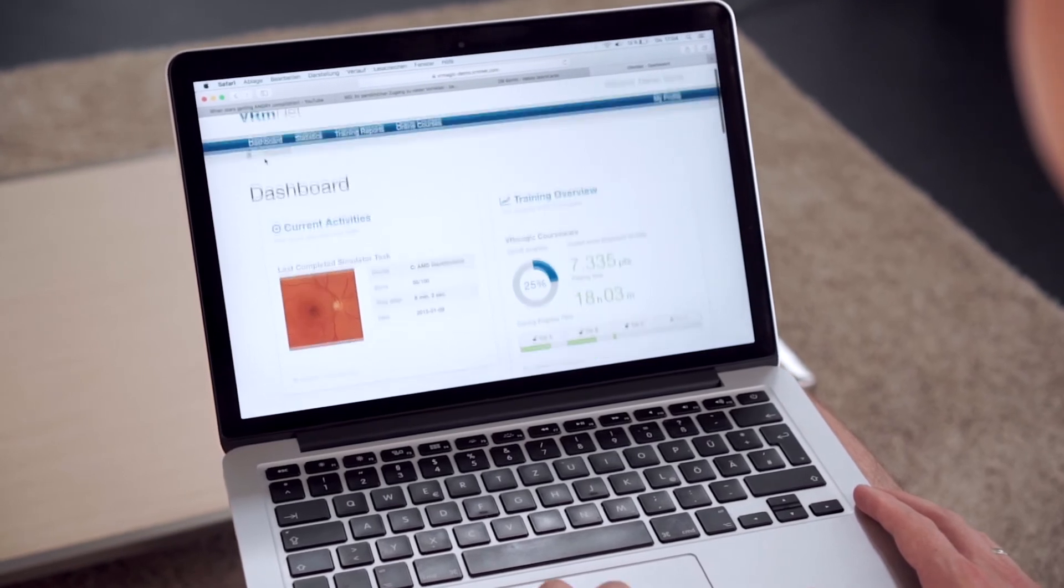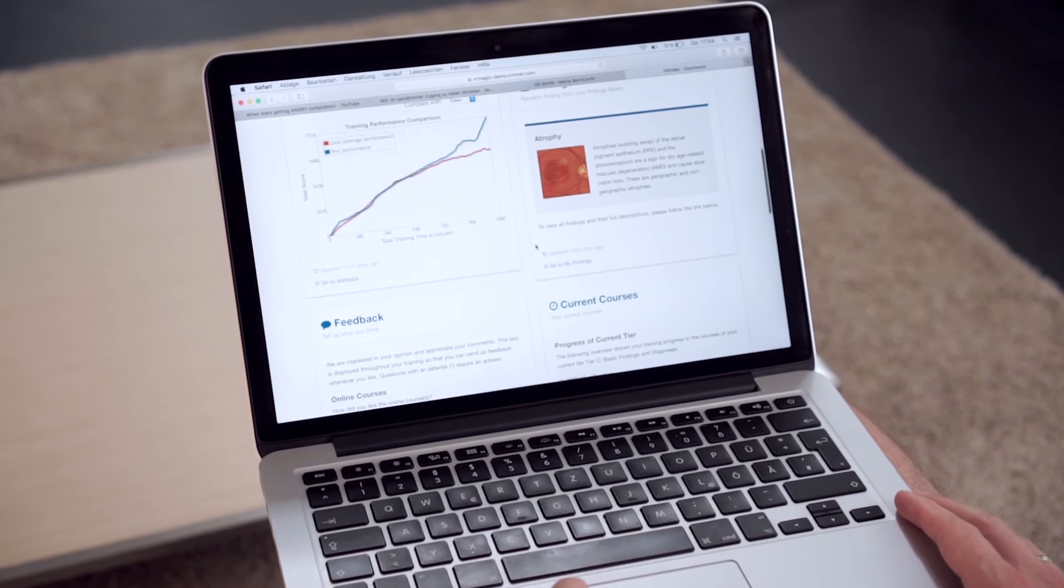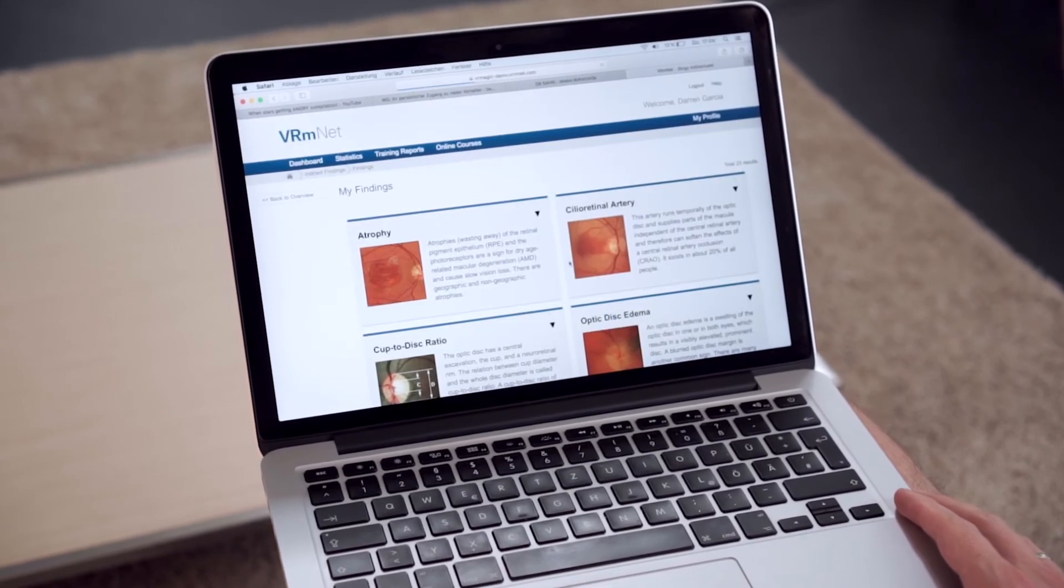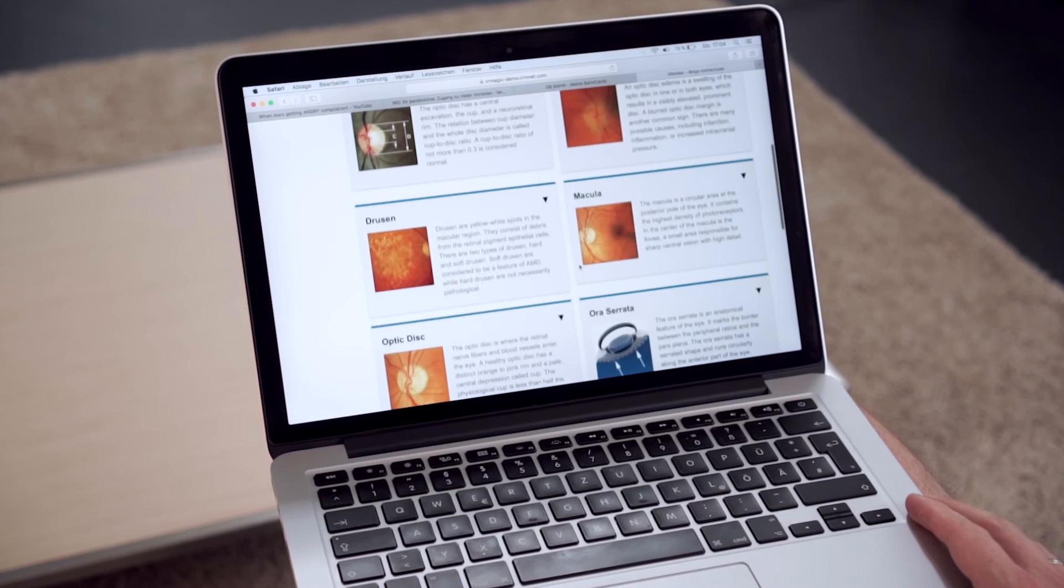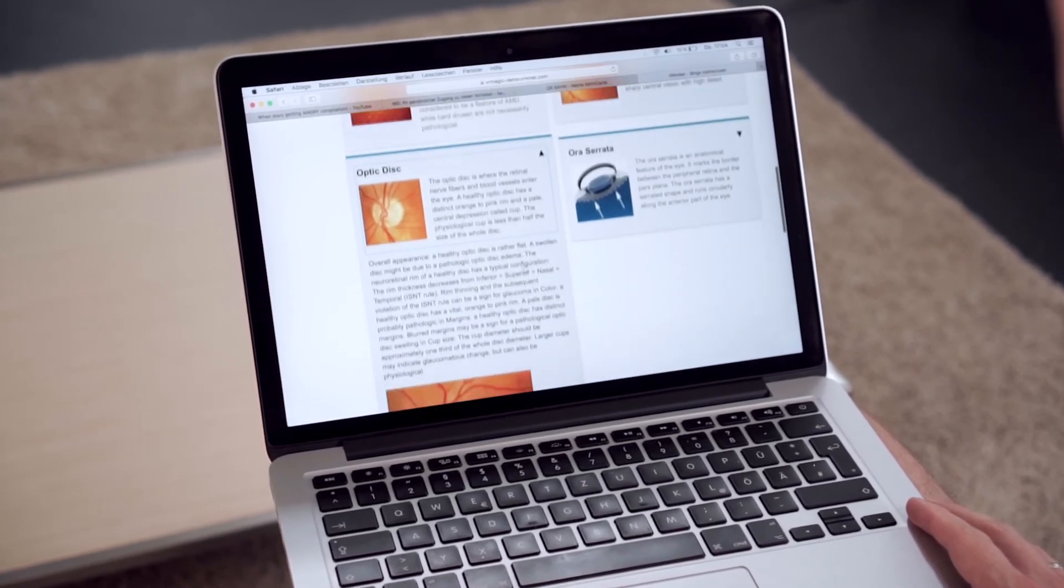The VRMNet dashboard also includes an online orientation course on training with IC Indirect and a personal library of findings for further review. Educators use VRMNet to monitor their students' training progress.